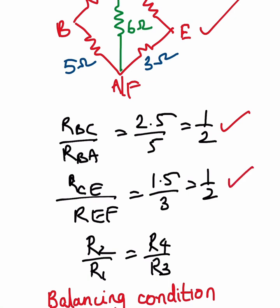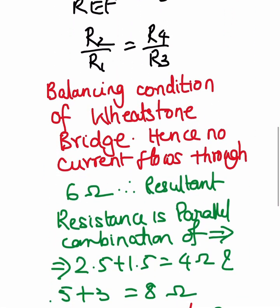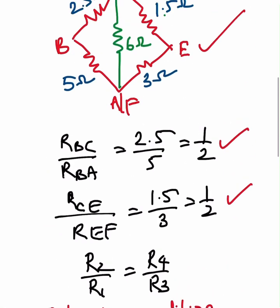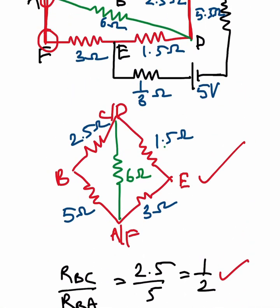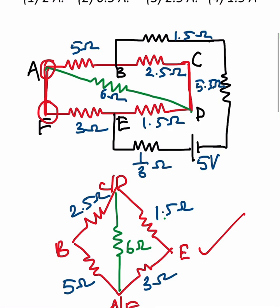So this satisfies the balancing condition of the Wheatstone bridge, that is R2 by R1 is equal to R4 by R3. Therefore, no current passes through the center, that means in the green color 6 ohms, no current passes.